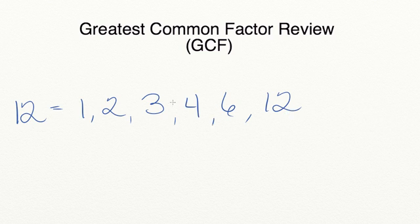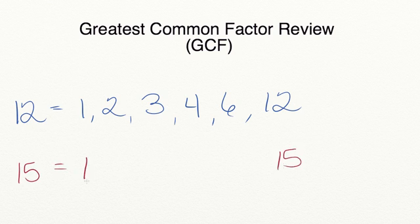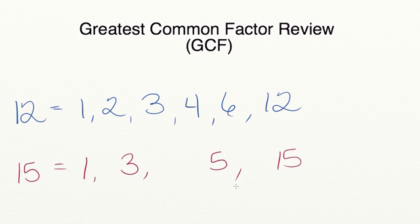We can't multiply anything by 5, so we've now listed all of our factors for the number 12. Let's compare this to the factors of the number 15. We can multiply 1 times 15 to equal 15. We can't multiply anything by 2, so we move on to 3. We can multiply 3 times 5 to equal 15, and there aren't any other numbers, so we've now listed all of our factors.